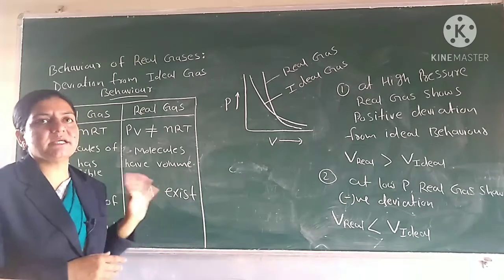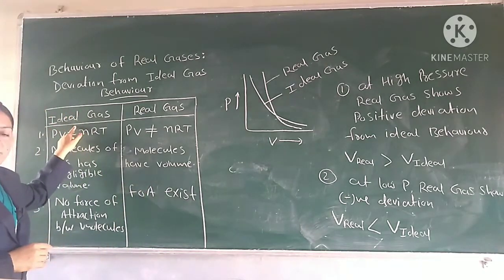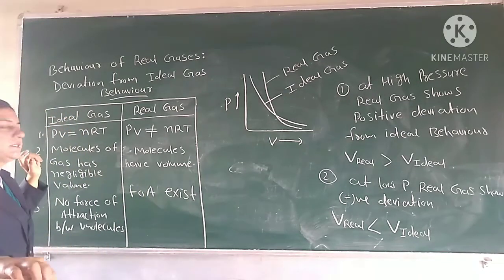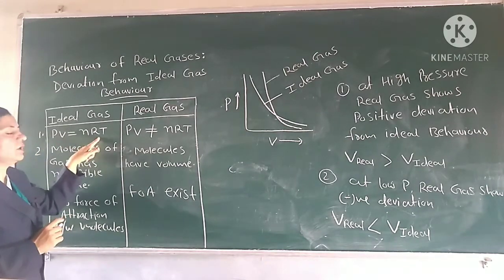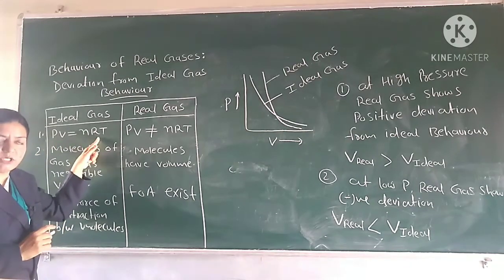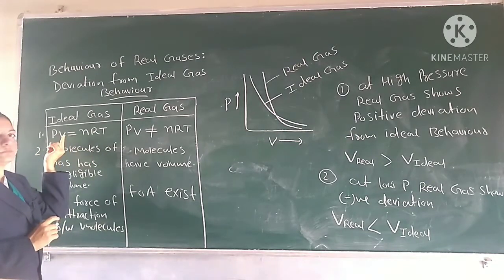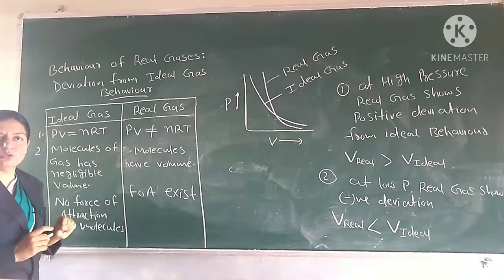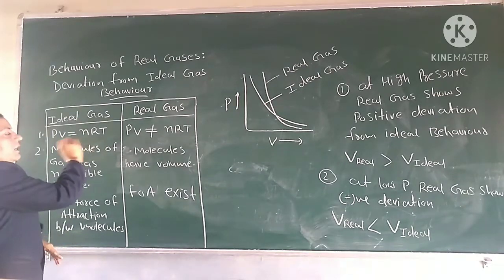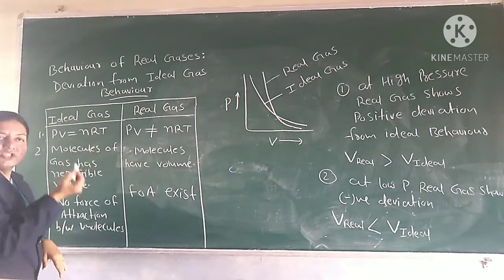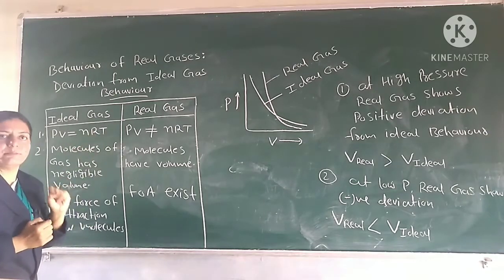Let's take a general idea. For the ideal gases, PV is equal to NRT. The product of the pressure and volume is equal to NRT. Here, N is the number of moles of gas, R is the gas constant, and T is the temperature.